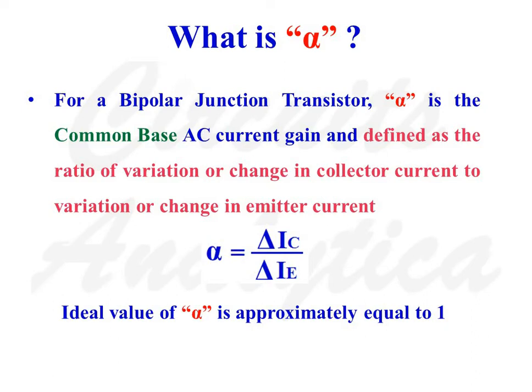What is alpha? For a bipolar junction transistor, alpha is the common base AC current gain and it is defined as the ratio of variation or change in collector current to variation or change in emitter current. For a transistor in common base configuration, collector current is the output current and emitter current is the input current. So, alpha is equal to delta Ic divided by delta Ie. Ideally, the value of alpha is approximately equal to 1 and always it is less than 1.